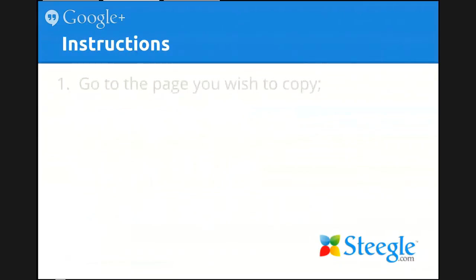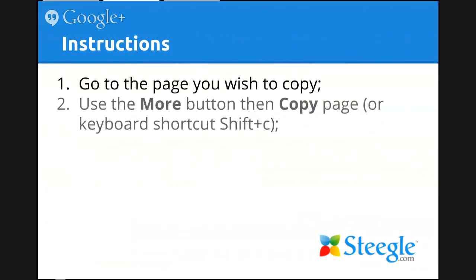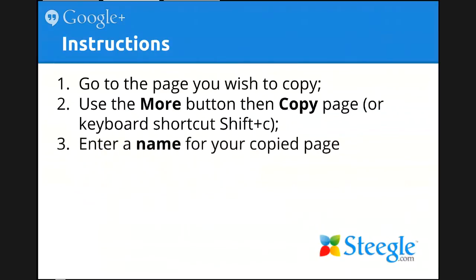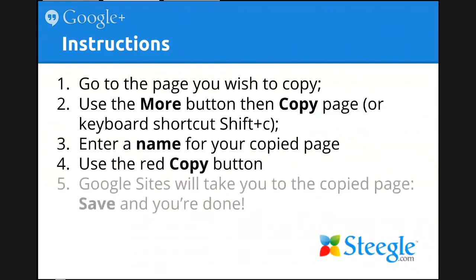Here are the instructions. You go to the page you wish to copy. You use the More button, then the Copy Page feature, or you can use the keyboard shortcut Shift plus C. Enter a name for your copied page. Use the red Copy button. Google Sites will then take you to the copied page. You can make any edit that you need, then use the Save button and you're done.